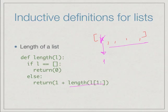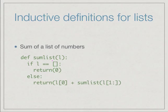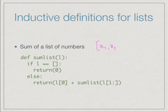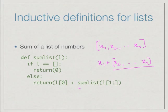Here is another function which instead of computing length adds up all the numbers, assuming the list is a list of numbers. If there are no numbers to add — an empty list — the sum is 0. Otherwise, the sum consists of taking the first value and adding it to the rest. So for a list x1, x2, ..., xn, this is x1 plus the sum of x2 through xn, obtained by a recursive call, then adding x1 to that.